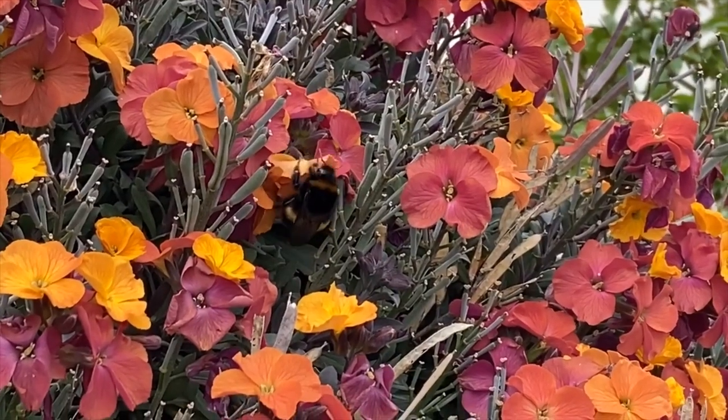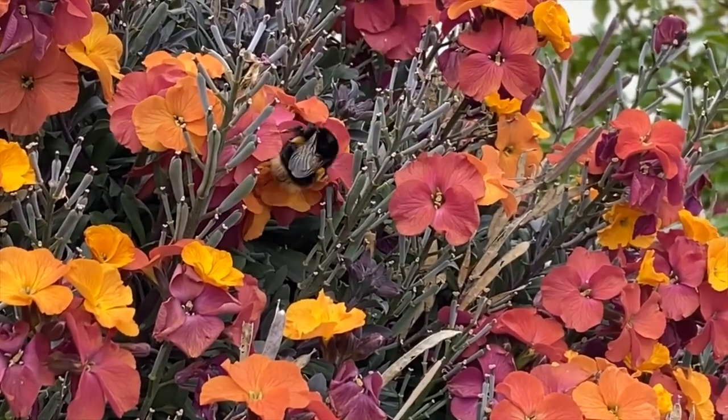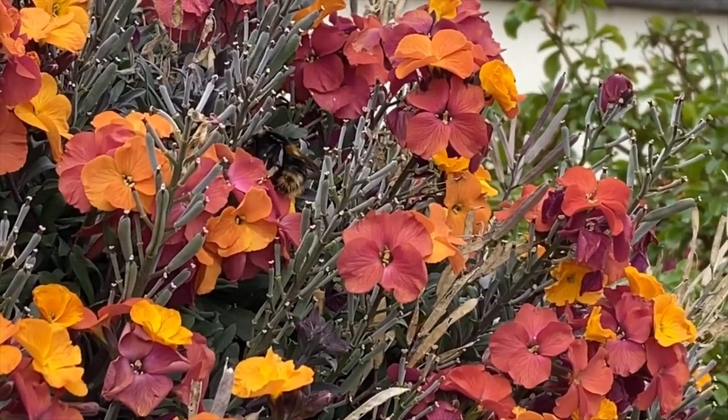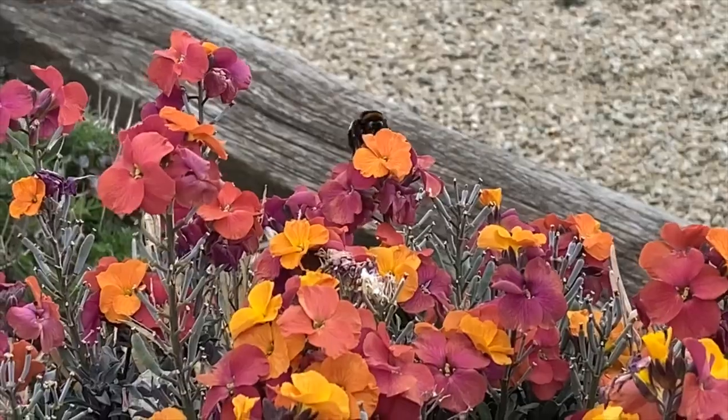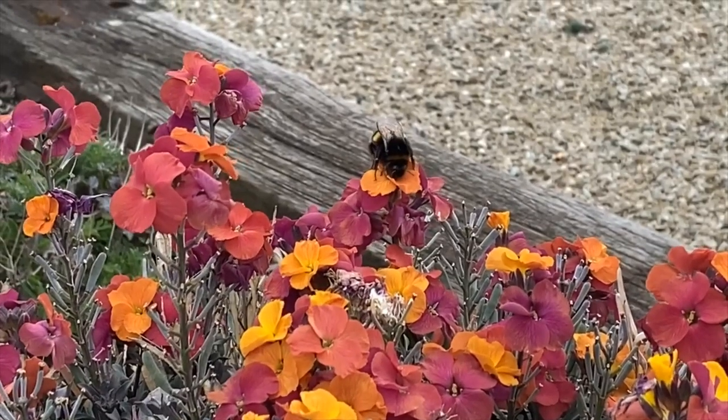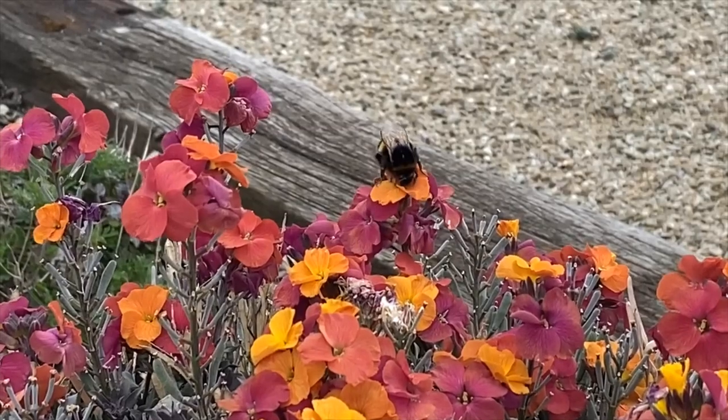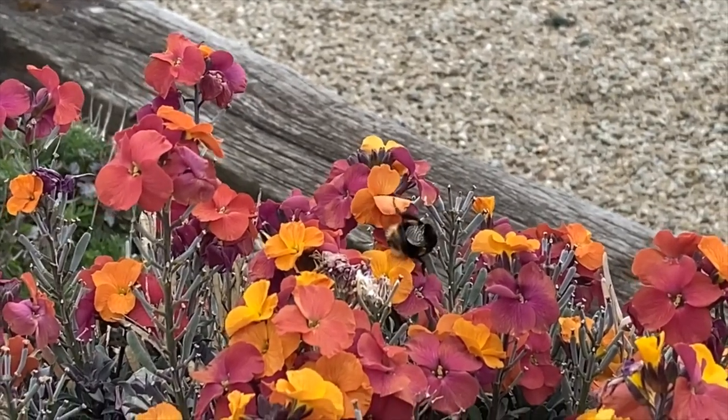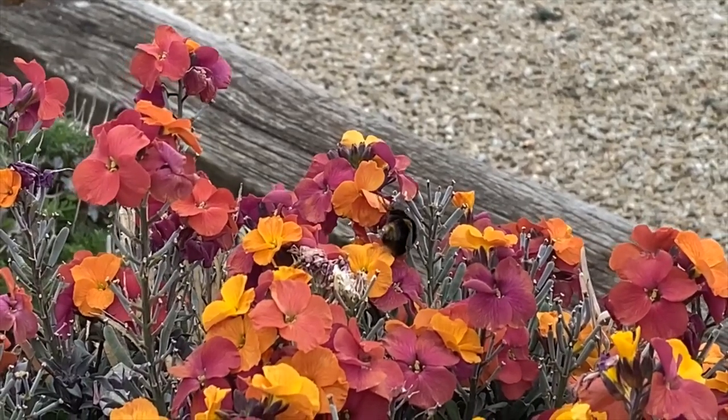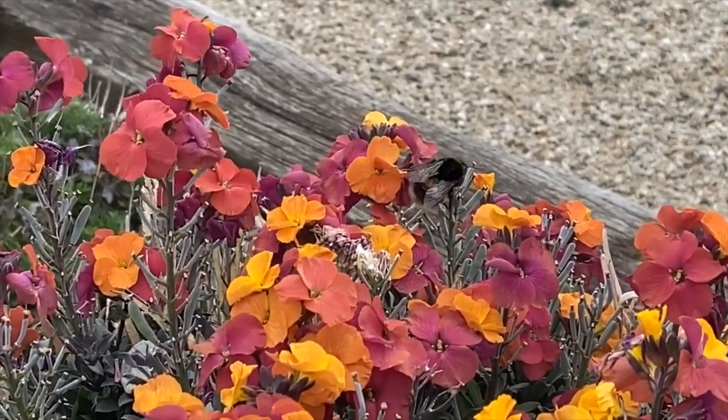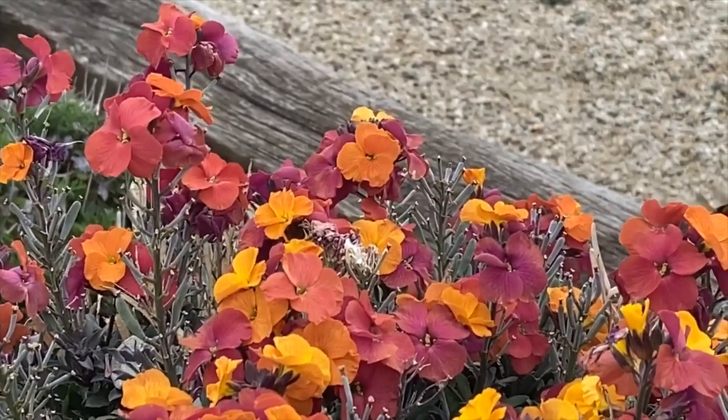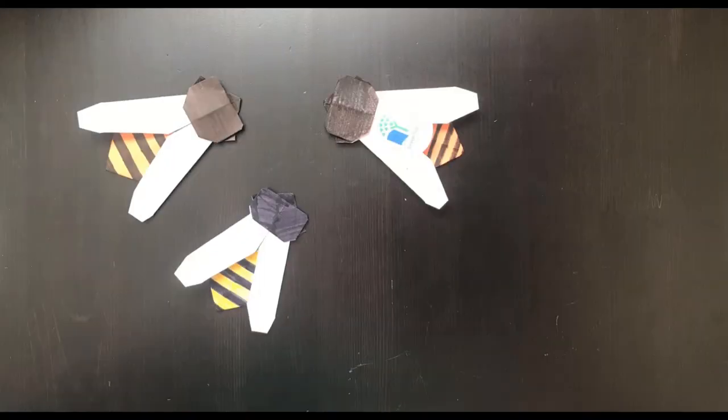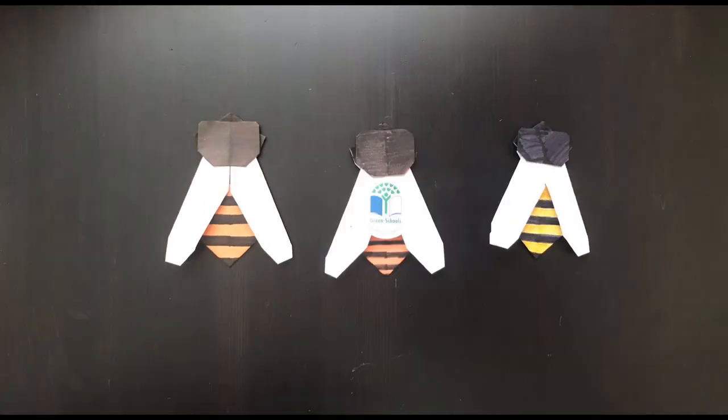Well, bees eat nectar and nectar is inside the petals of flowers. Plants don't just make nectar to be nice to the bees, they want the bees to eat it. That's because while bees are eating nectar, something called pollen gets stuck to them. Then when the bee moves on to another flower, the pollen falls off and lands on the new flower. If this happens, that flower can now make a seed and a new plant can grow. Plants need pollen from each other to make new seeds and they can't stand up and walk over to each other, so they rely on insects like bees to move it for them. This is called pollination.